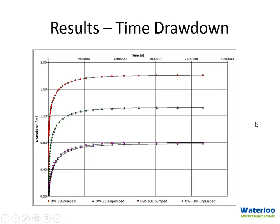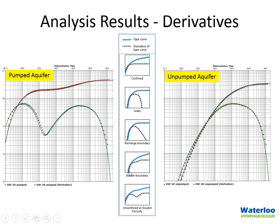The results are displayed over the next couple of slides. The time-drawdown from each observation point shows a 30-day duration, with the highest drawdown occurring in the pumped aquifer. As a first stage we looked at the drawdown derivative plots to identify the flow regimes — this is a nice example showing delayed yield in the pumped aquifer. The drawdown derivative is shown in green and the standard drawdown plot is shown at the top, illustrating a pattern typical of an unconfined or dual-porosity scenario.